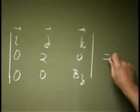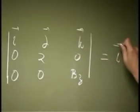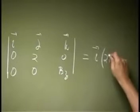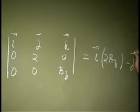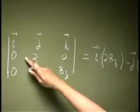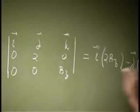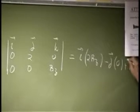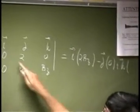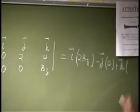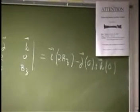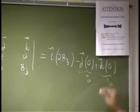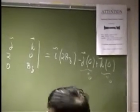So, this should come out to be, if I take I, then you have 2BZ. Then if I take J, you have this times this, this times this. That is 0. Plus K. Then we are looking at this times this, this times this. That is also 0. So, this goes to 0. This goes to 0.